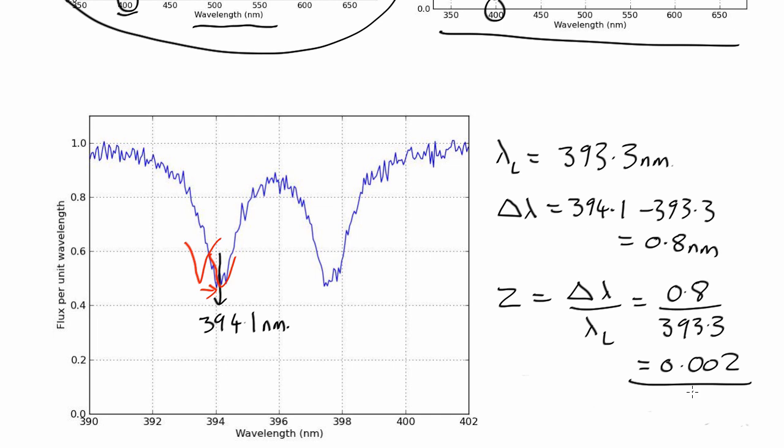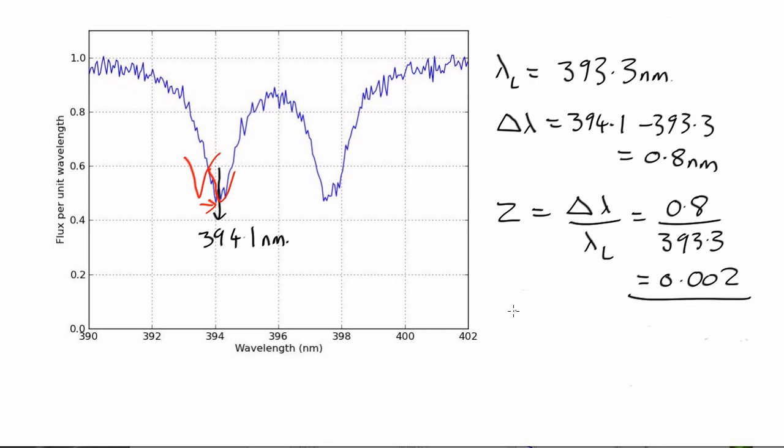Using the Doppler effect equation, we can work out what speed this corresponds to. Now the velocity is equal to the redshift times the speed of light. So that's 0.002 times 300,000 kilometers per second.